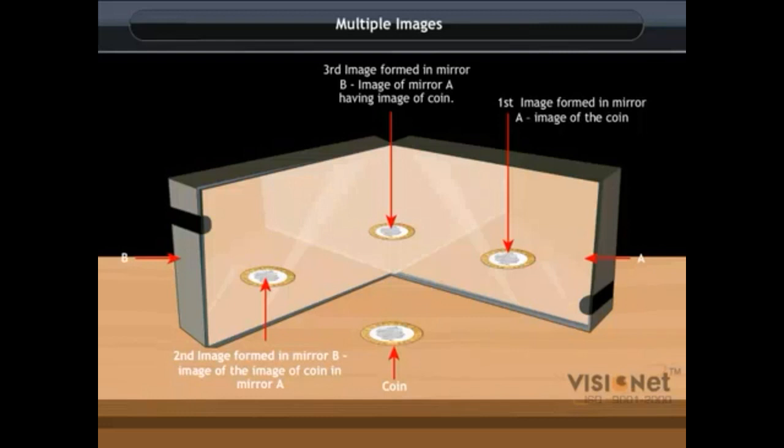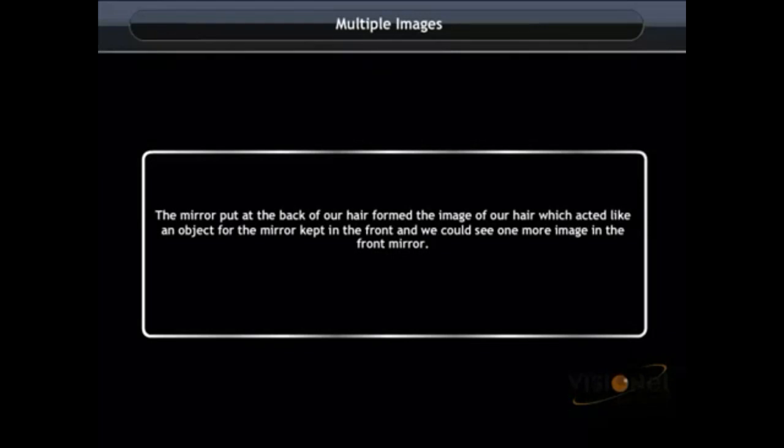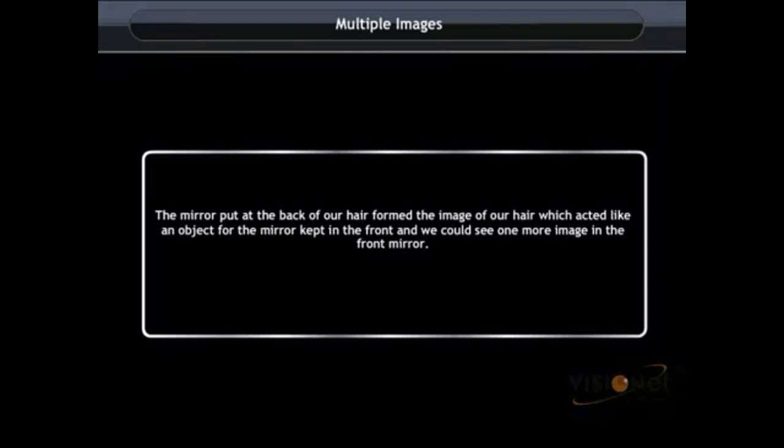This is called multiple image formation or multiple reflections. Now we come back to our examples. The mirror put at the back of our hair forms the image of our hair, which acts like an object for the mirror kept in front, and we could see one more image in the front mirror.